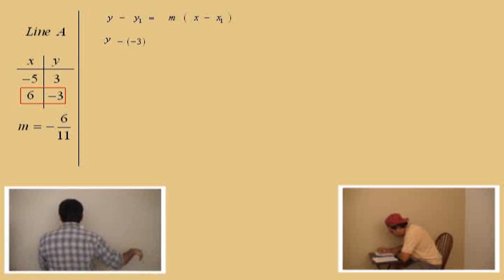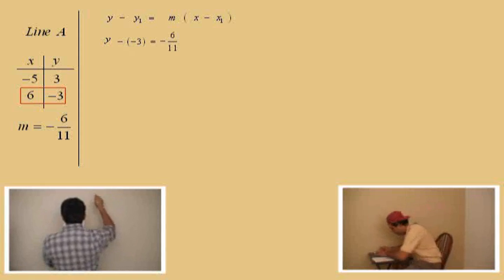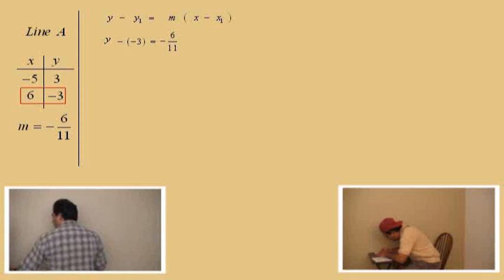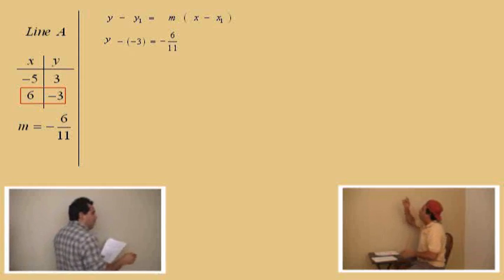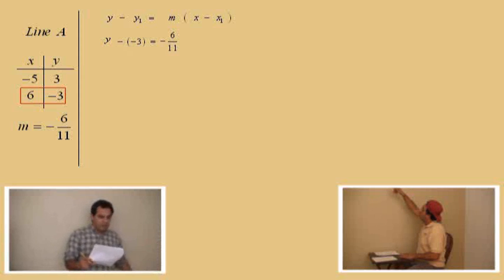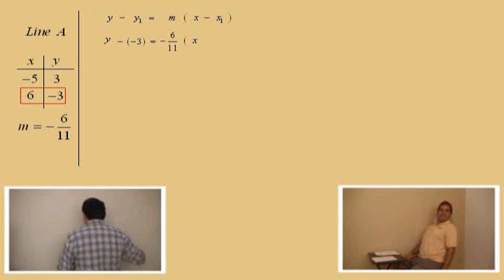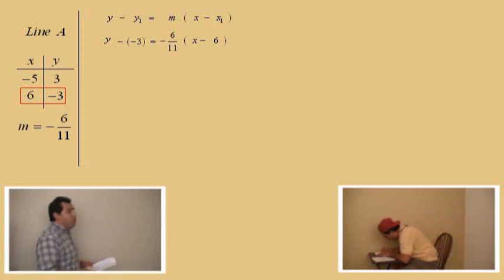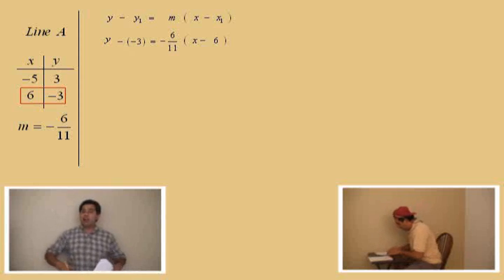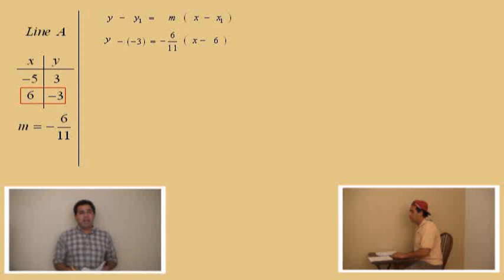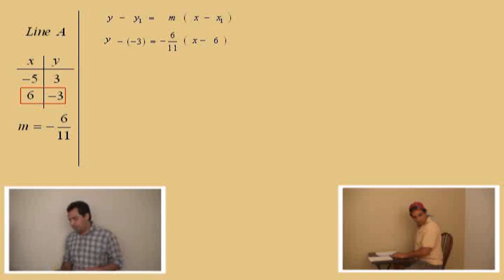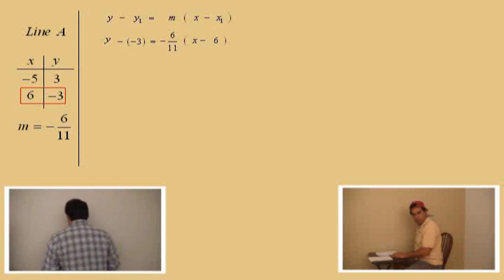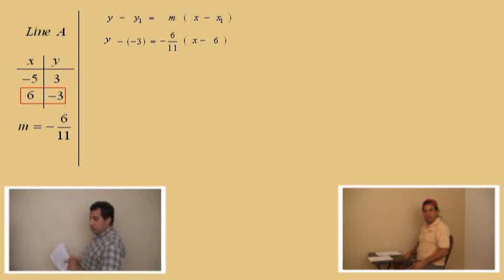What was our slope, Charlie? Negative six over eleven. So equals negative six over eleven, and we have an x. Now we have to plug in the x1 value. What's x1? Six. Very good. Notice we still have a y and an x in our equation — that's fine because all we have to do is solve for y. You have to practice your algebra so that you can get to the y value. Our goal is to solve for y with this equation here.